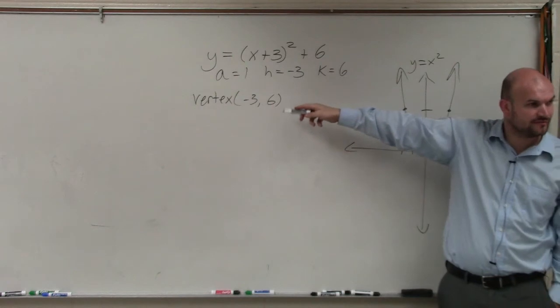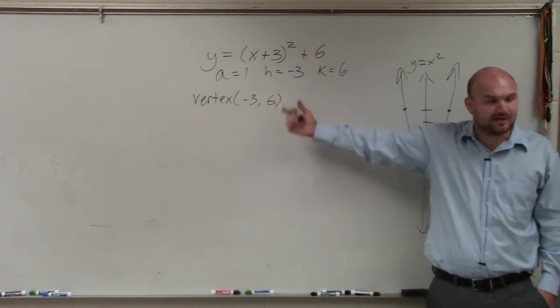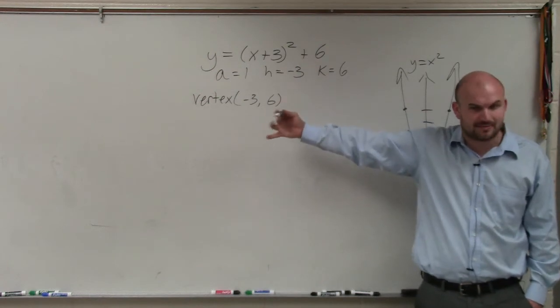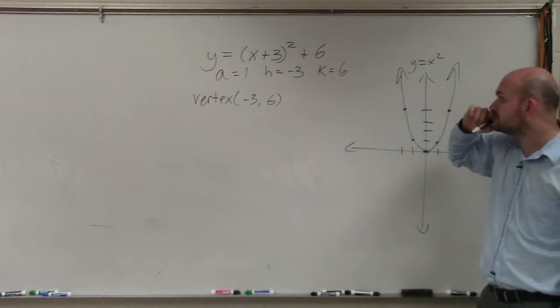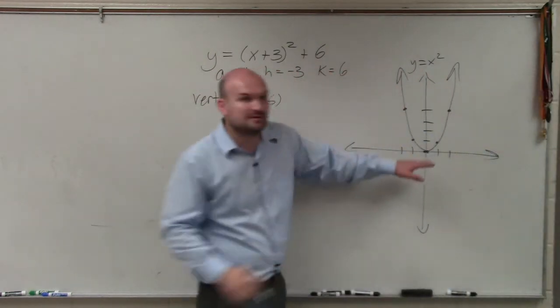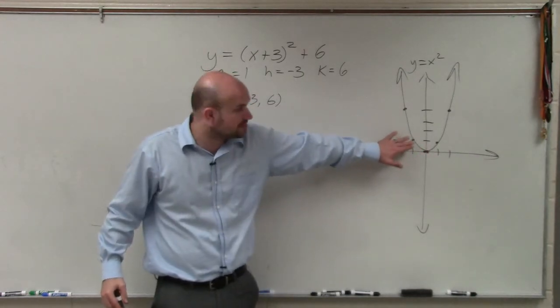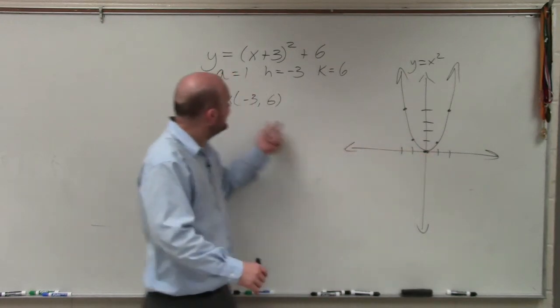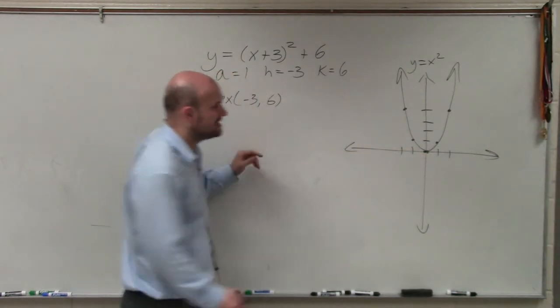So does everybody at least see where the vertex is? I told you I'm going to explain it, but I know the easiest way to think about this is H is always going to be your opposite value. So we talked about the parent graph. Here's what the parent graph looks like. The parent graph has the vertex at 0, 0. Now the vertex is at negative 3, 6.